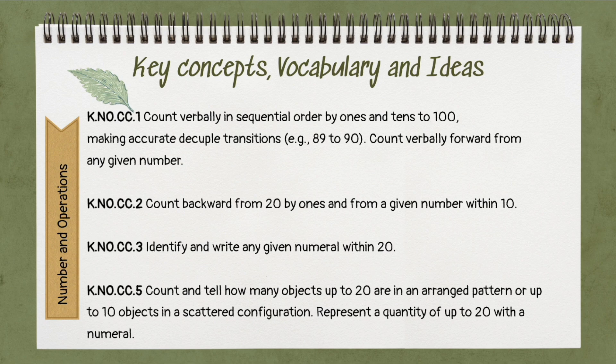In this particular standard with number and operations, I've listed the four number and operations, count and cardinality standards, and the language of the standards. So how do we unpack the standards? First, we need to identify the standards themselves — clearly define the standard we're working with. We'll then identify key concepts, determining the main ideas or concepts within the standard as well as vocabulary. We'll identify the skills that students need to demonstrate. We may also determine the depth of knowledge — understanding the level of thinking required, which can be aligned to Bloom's taxonomy. Consider context: think about how the standard relates to real-world applications.